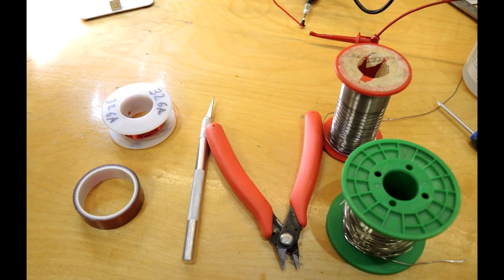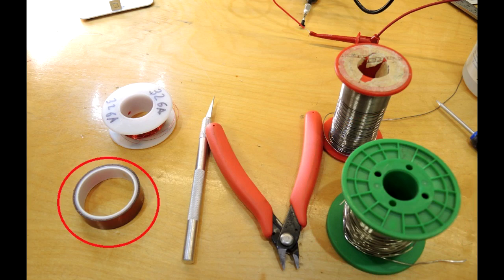The other things you need of course are some solder, hopefully a lead solder if you have it. If you don't, lead-free works but it's much more difficult. Lead-free is always much harder to use in hand soldering. Some Kapton tape, X-Acto knife, and a pair of side cutters, and that's all that I need. Oh, and a soldering iron.